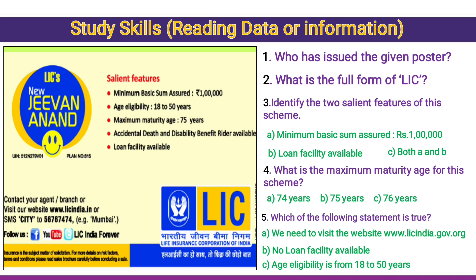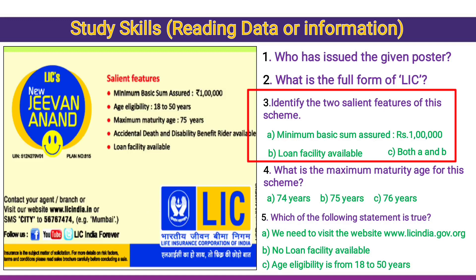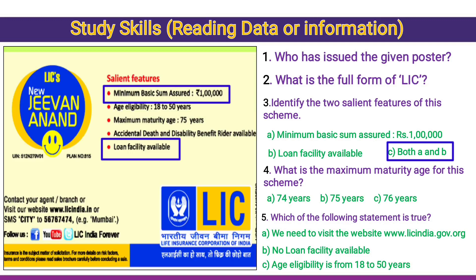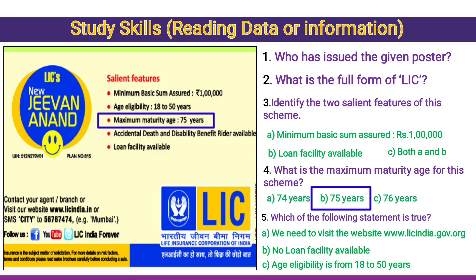Let's get into one more study skill: poster. Go through each and every detail given in the poster to find the answers. First question: who has issued the given poster? The answer is LIC. Second question: what is the full form of LIC? Life Insurance Corporation of India. Third question: identify the two salient features of this scheme. Minimum basic sum assured one lakh, and loan facility is available — both A and B, so option C is right. Fourth question: what is the maximum maturity age for this scheme? Check the salient features — 75 years, option B is absolutely right.